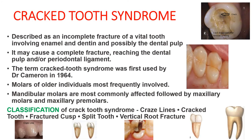Now starting with the diseases — the first one is crack tooth syndrome. The tooth has a crack, and it is described as an incomplete fracture of a vital tooth. This fracture line can involve enamel and dentine and possibly the dental pulp. It may cause a complete fracture reaching the dental pulp and/or the periodontal ligament.